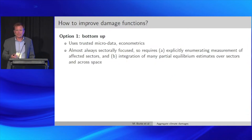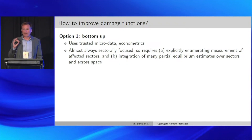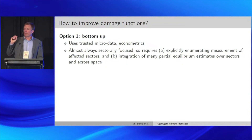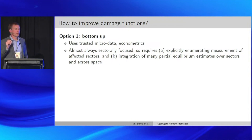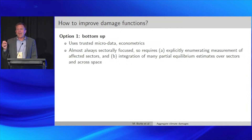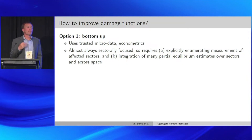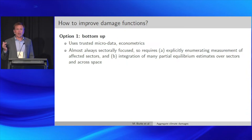How do we use these estimates to improve damage functions? Tama just gave an excellent presentation on one approach — the bottom-up approach. This uses very trusted, high-quality micro data from around the world and careful econometrics to causally identify the relationship between a climate variable and that outcome. It's sectorally focused — you go sector by sector. Challenges are that you have to measure all sectors you care about and integrate them sensibly, and some sectors are necessarily left out for lack of data.